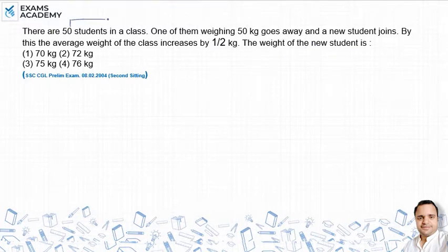In a class, there are 50 students. One student which weighed 50 kg goes away and a new student joins. This is why the class average weight increases by half kg.